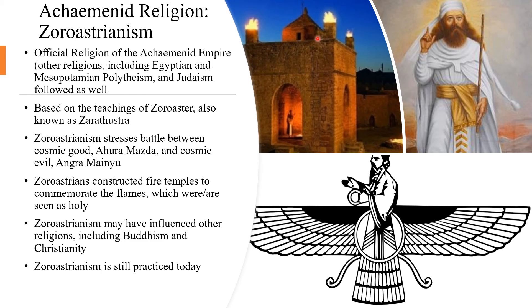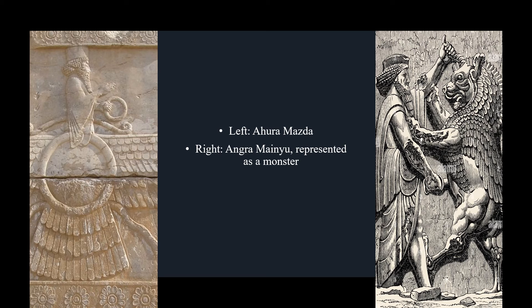This is a very simplified discussion of the religious beliefs of Zoroastrianism, so far as they are relevant to the Achaemenid Empire. On the left part of this slide is a depiction of Ahura Mazda, who represents the cosmic good. On the right is Angra Mainyu, represented as a monster. Good and evil must vie against each other in an eternal struggle, according to Zoroastrianism.